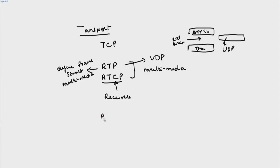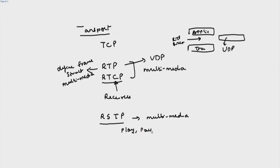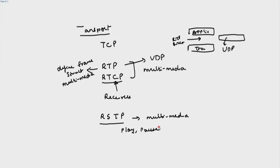Another protocol in this space, also sitting between the application and transport layers, is RTSP — Real-Time Streaming Protocol. This is intended for multimedia applications and is used for play/pause type controls. In other words, it conveys information such as play the video, pause the video, fast-forward, or rewind. These protocols — RTP, RTCP, and RTSP — evolved because many applications were each doing this themselves, and just as TCP handles many general applications, it was felt that standard protocols were needed to handle common multimedia requirements.